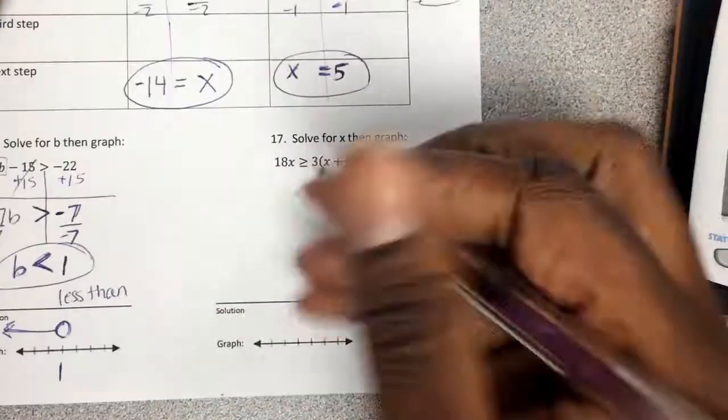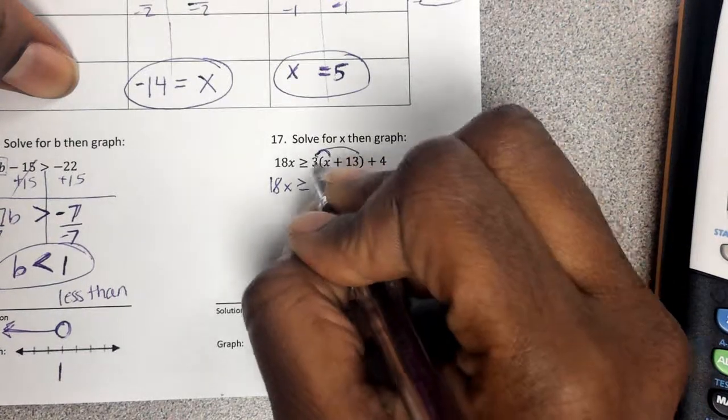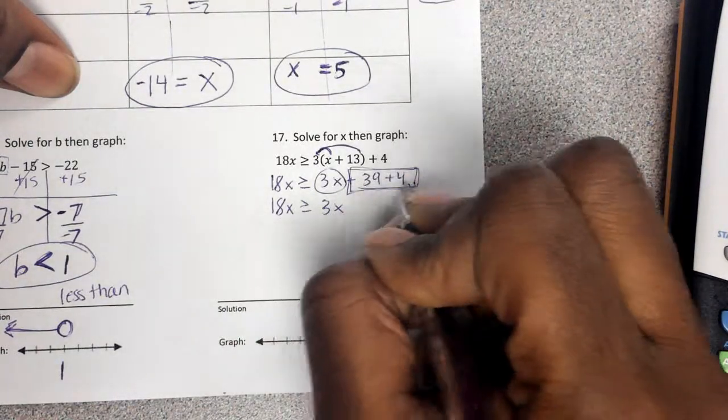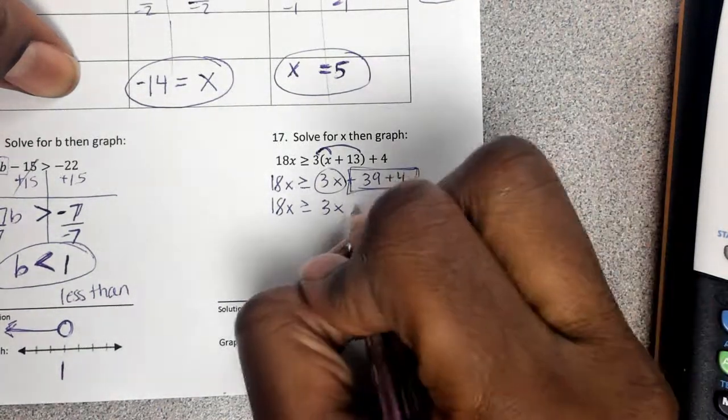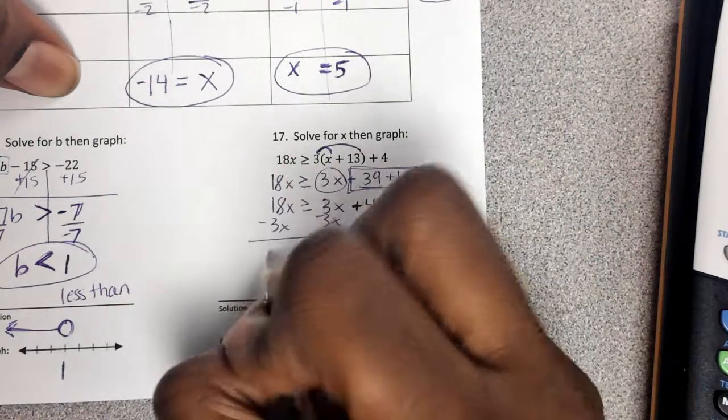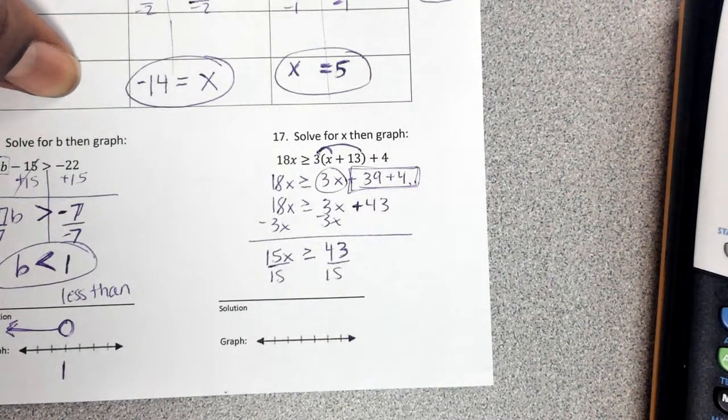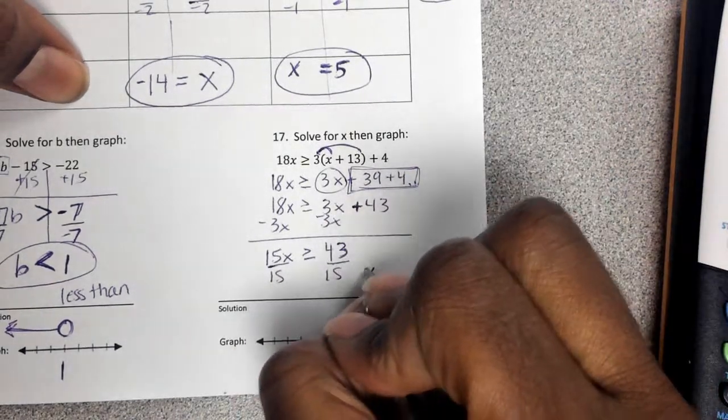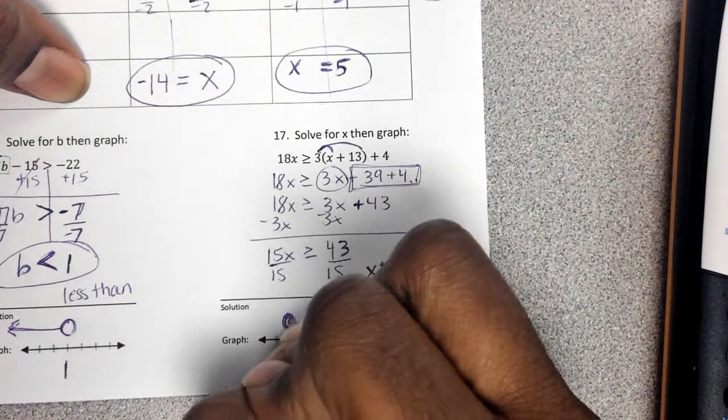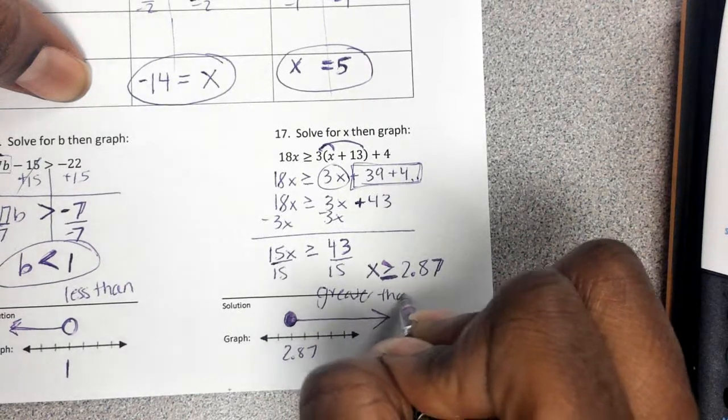And the last one I'm going to do quickly. If you have questions about it, please ask me when you come to tutoring. 3x, 39. 3x. Oh, there's no more x's. So these two get added together because these both do not have x's. 39 plus 4, 43. Now I move my x. x's are on different sides. So I've got to do the opposite. So that's 15x. I'm going to have a 43 divided by 15, divided by 15. 43 divided by 15, that's going to be a decimal. So x is greater than or equal to 2.87, we'll call it. So 2.87. Now I close my circle in. Why? Because there's an equal to. Close the circle in because there's an equal to. And this is greater than or equal.